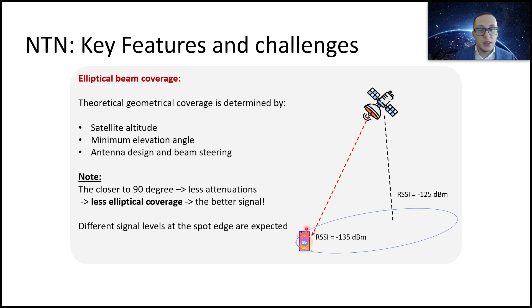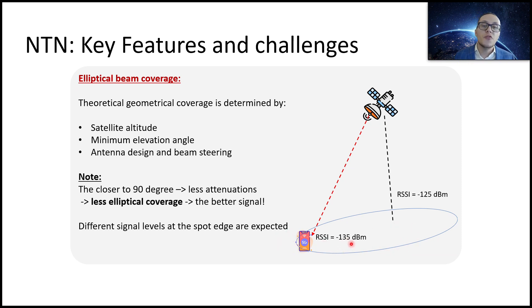All users are basically located in one direction, since the satellite illuminates the ground below it. Coverage depends on satellite attitude, elevation angle, and antenna design. There are also different signal levels at the spot edge — as expected, at the edge of the coverage spot the signal strength will be a little bit lower, whereas right below the satellite it will be a bit better because the path is shorter and attenuation is less. This should be taken into account when working with satellite systems.